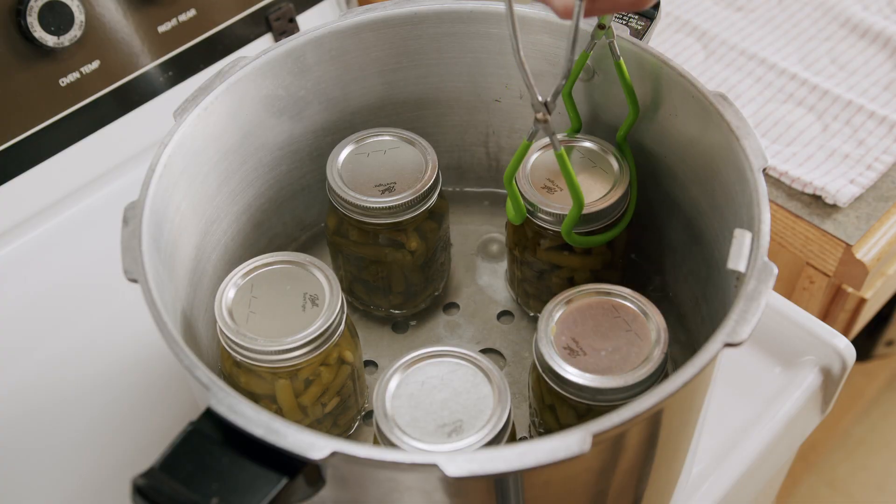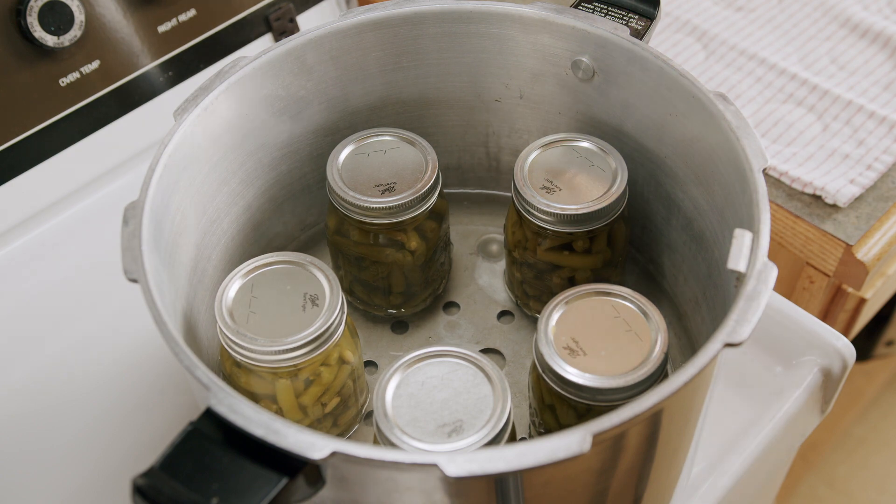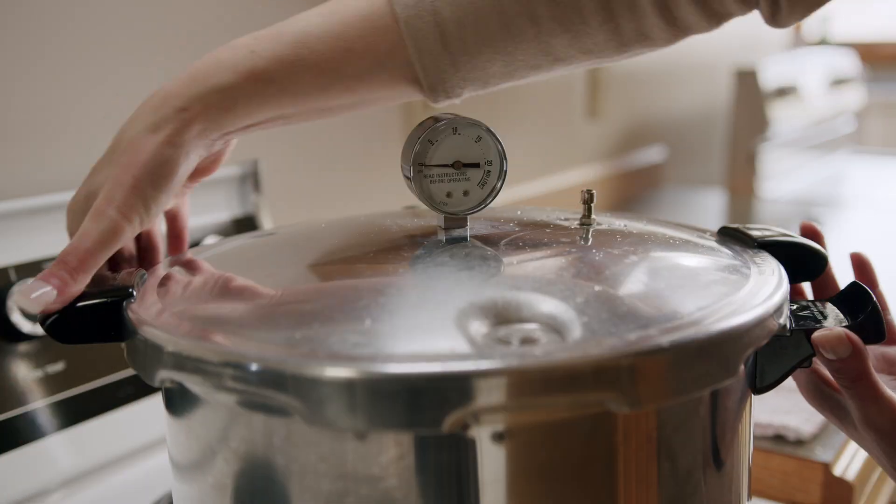Next, place filled jars carefully on the rack using a jar lifter. Then place the lid onto the canner and lock into place.